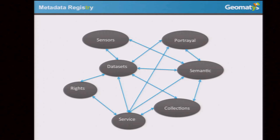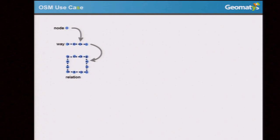The last interesting use case is OpenStreetMap data. The OpenStreetMap model is really a graph — you have nodes that relate to ways, and ways that relate to relations. When you download the OSM raw data, it's really a graph of objects. Usually people take that data, transform it into a relational database, and lose the original structure. What we did was put OSM data directly into the graph database without breaking the original model, keeping the structure in order to do data analysis.